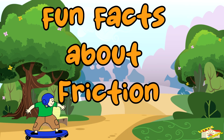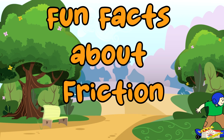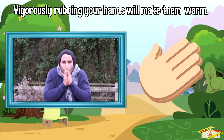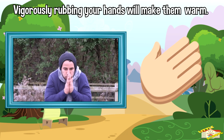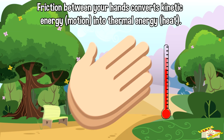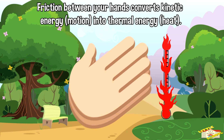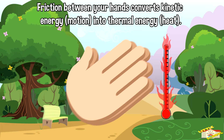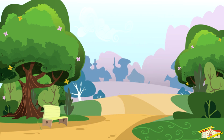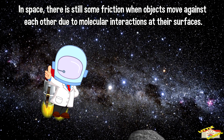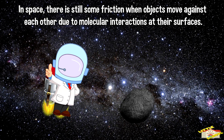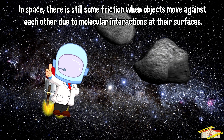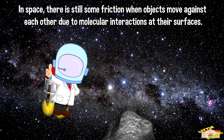Now here are fun facts about friction. When you rub your hands together vigorously, you can feel them getting warmer. This is because the friction between your hands converts kinetic energy, which is motion, into thermal energy, which is heat. Even in the vacuum of space, where there is no air, there is still some friction when objects move against each other due to molecular interactions at their surfaces.